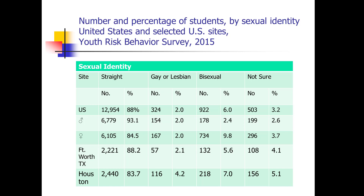Let's look at the number and percentage of students by sexual identity in the United States and selected U.S. sites. This comes from the Youth Risk Behavior Survey of 2015 — the first time that the Youth Risk Behavior Survey asked questions about sexual orientation.